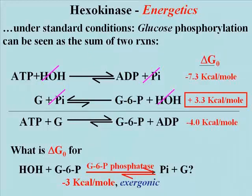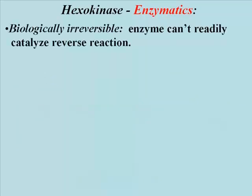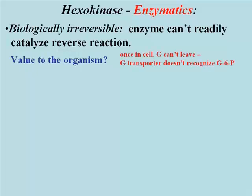This is an important reaction, especially in liver cells. Let's look at the enzymatics of hexokinase — some of the enzyme's catalytic properties. The catalyzed reaction is biologically irreversible. All chemical reactions, including biochemical ones, are considered reversible, so we call a reaction biologically irreversible when the enzyme does not readily bind and therefore reconvert products to reactants. Once inside the cell, glucose is rapidly converted to glucose 6-phosphate and is no longer recognized by the glucose transporter proteins that got it into the cell in the first place — so this valuable nutrient, once in the cell, can't get out.